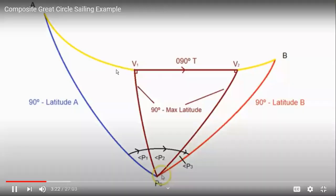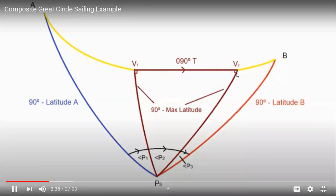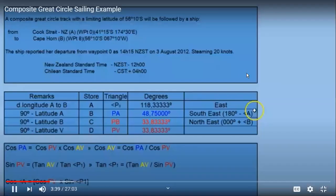We have three routes — three tracks from A to B. The route from A to B consists of: A to V1 is a great circle, V1 to V2 is a rhumb line, and V2 to B is our great circle.